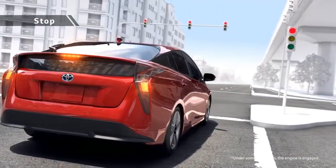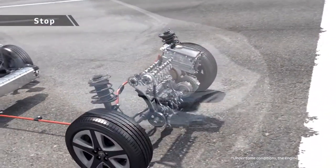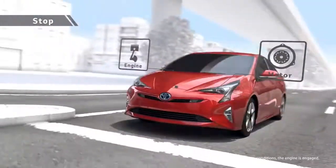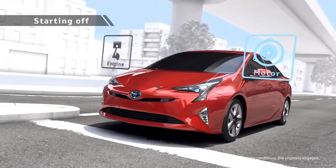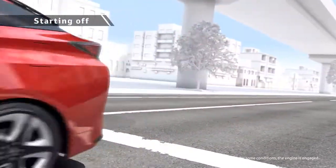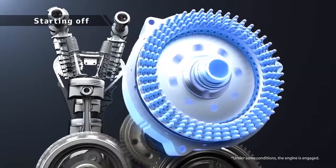For a Toyota hybrid vehicle, when not moving, all units stop and there is no wasted energy consumption. When the vehicle starts off, the motor drives it quietly and smoothly.